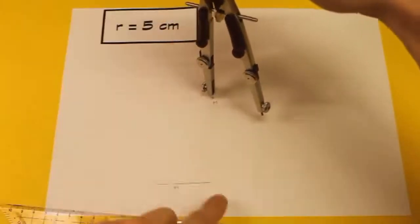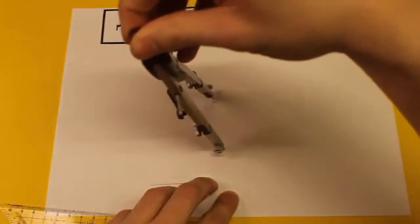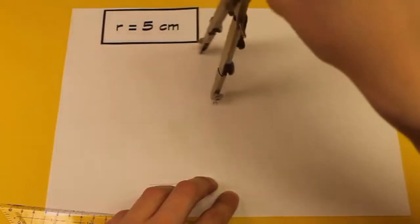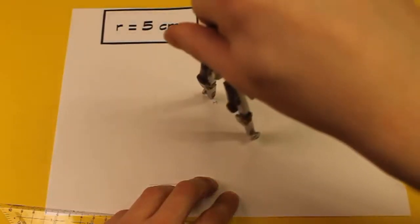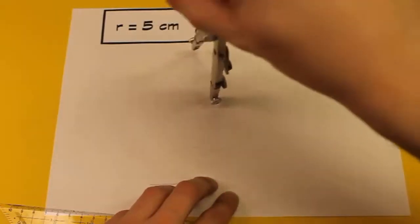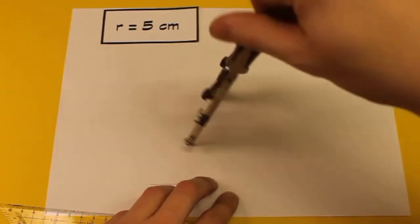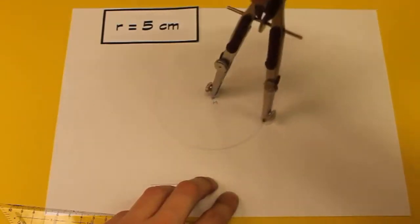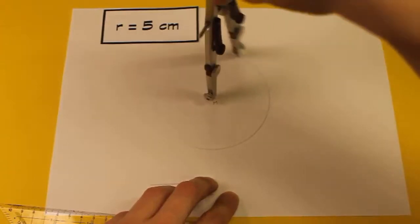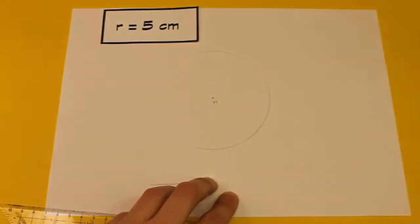Jetzt können wir den Kreis konstruieren. Passt aber auf, dass ihr nicht euer Handgelenk verkrampft. Denn dann wird das ziemlich schwer zum Zeichnen und dann könnt ihr verrutschen und dann wird das Ganze nichts. Wenn die Kreislinie zu locker wird, dann zieht diese Stellen einfach nochmal nach.